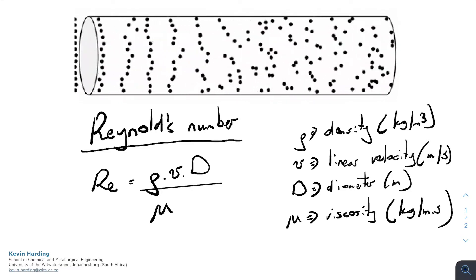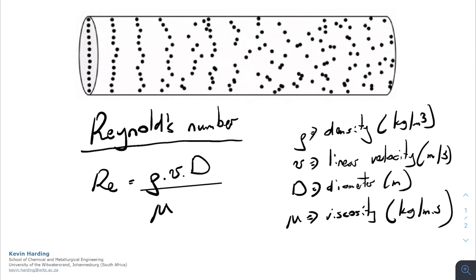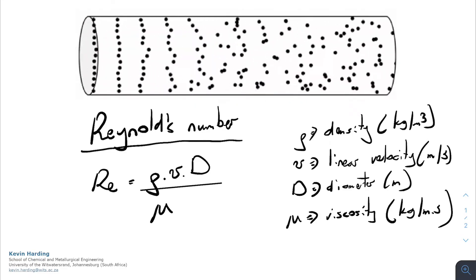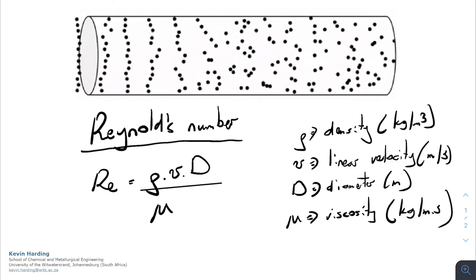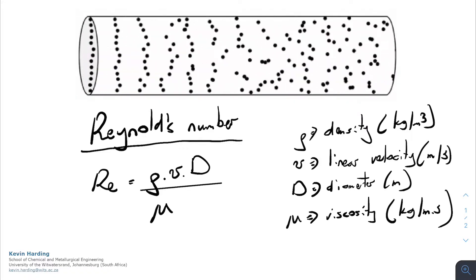So what this means is that for a Reynolds number that is high, so that would be a turbulent flow, it's going to have a high density, velocity, or a large diameter, and a high Reynolds number or high turbulence is going to have a low viscosity.